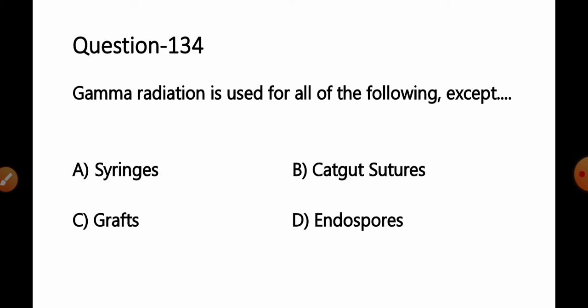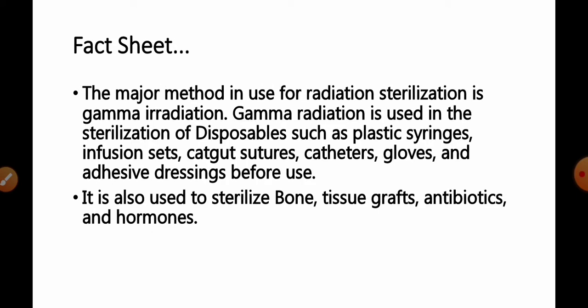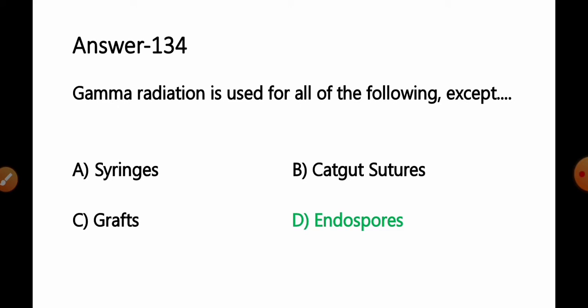Question 134: Gamma radiation is used for all of the following except: option A syringe, B catgut sutures, C grafts, D endospores. Gamma radiation is the major method used for radiation sterilization. It is used for disposables such as plastic syringes, infusion sets, catgut sutures, catheters, gloves, adhesive dressings, bone tissue grafts, antibiotics, and hormones. Endospores cannot be sterilized using gamma radiation, so option D endospores is the correct answer.